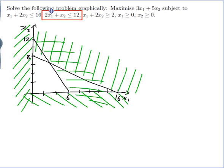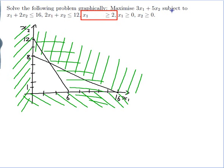One more inequality: x1 plus 2x2 is greater than or equal to 2. Treating it as a line — if x1 is 0, then 2x2 equals 2 so x2 is 1. If x2 is 0, then x1 is 2. I join those two points to get my line. Substituting in the origin: 0 is greater than or equal to 2, which is false. So I want the bit above my line and I'll cross out the bit below.